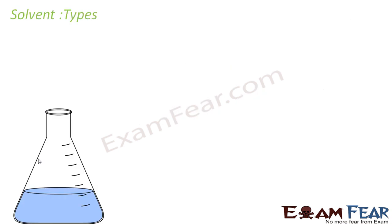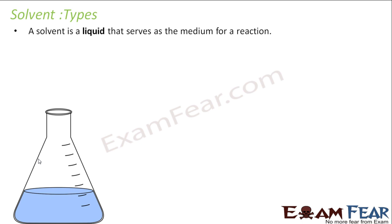Now we will talk about solvent. When we discuss nucleophile, that time only we have told that solvent plays a critical role. In case of polar aprotic solvent, the nucleophile behaves differently. We saw iodine was a very strong nucleophile in that case. So solvent plays a critical role. What is solvent? Solvent is nothing but a liquid that serves as a medium for reaction. When the reaction happens in the lab, you should have some liquid where you are reacting a compound. The reaction happens generally in a solvent.